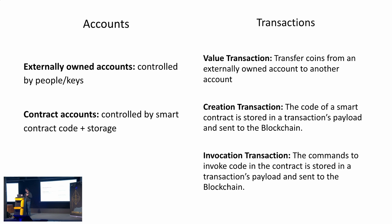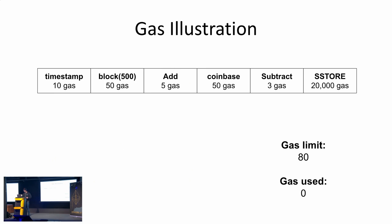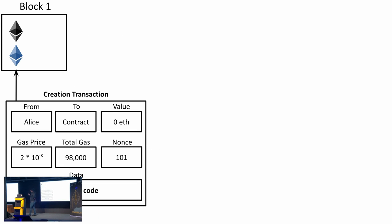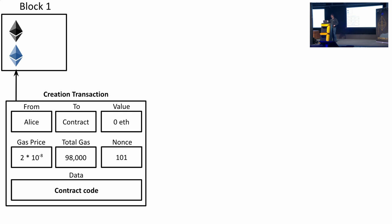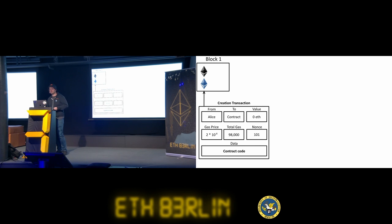There are three types of transactions to consider. One: you can just send money to a friend. Two: you can deploy a smart contract by sending bytecode to the network. Three: an invocation transaction — if you want to call a function in a smart contract. Also important: a smart contract is event-driven. It won't do anything in the background whatsoever. There's no background task; it will only execute if you poke it and force it to do something.